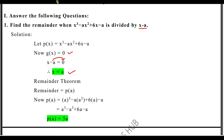p(a) equals a³ minus a·a² plus 6a minus a. Now a³ minus a³ will cancel. Then 6a minus a gives 5a. Therefore, the remainder is 5a by the remainder theorem.